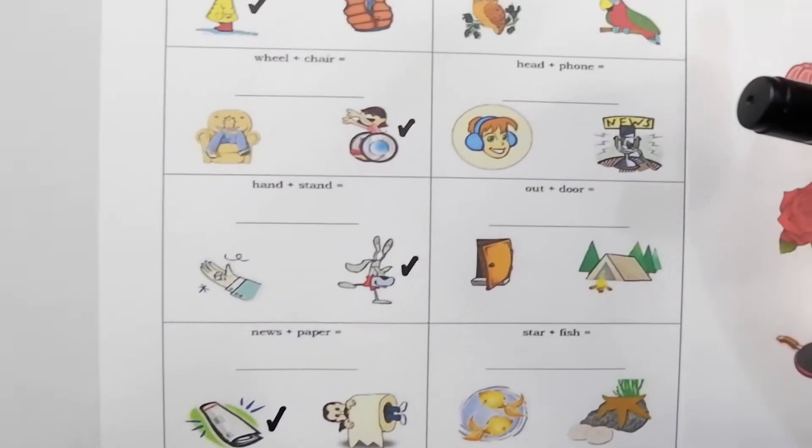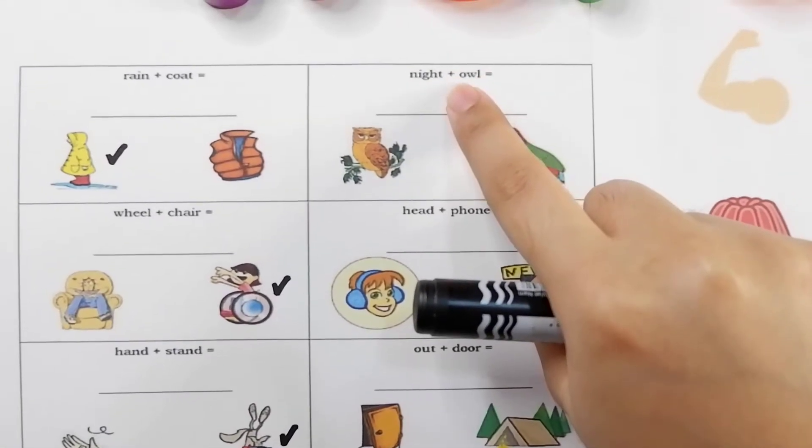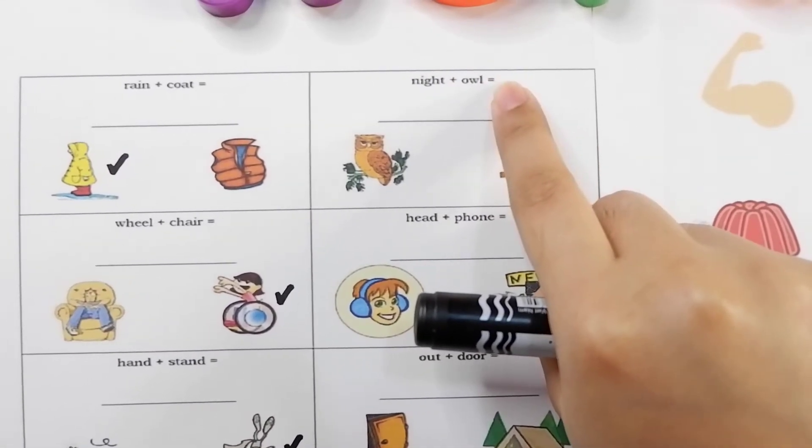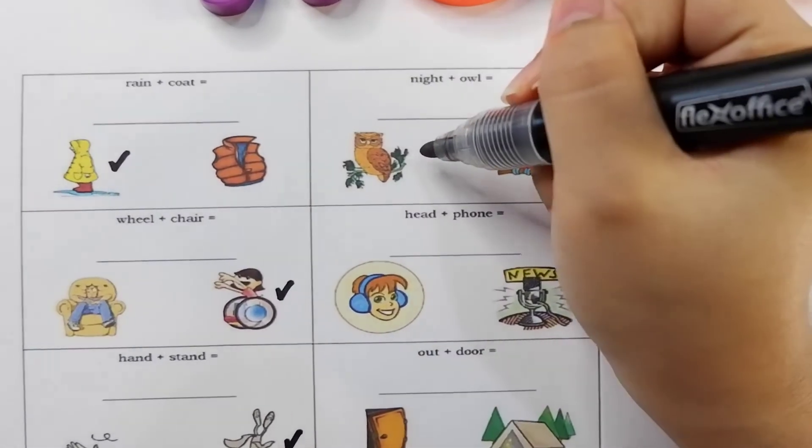Some more examples chameleons. We have night plus owl equals nightowl. It's this one.